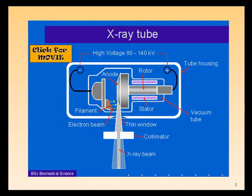The high voltage is 80 to 140 kilovolts between the two. Kilo is 1,000 volts, so we usually go up to 140 kilovolts. The higher the energy, the more penetrating the X-rays are.